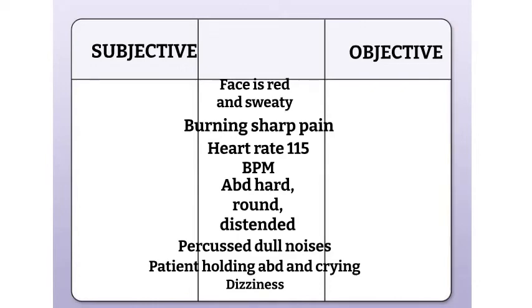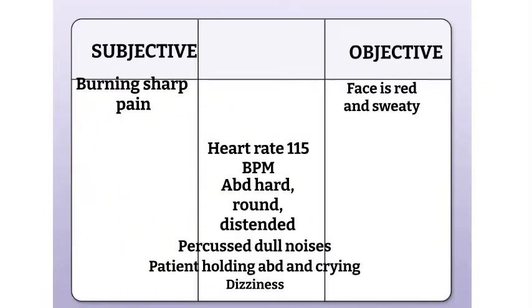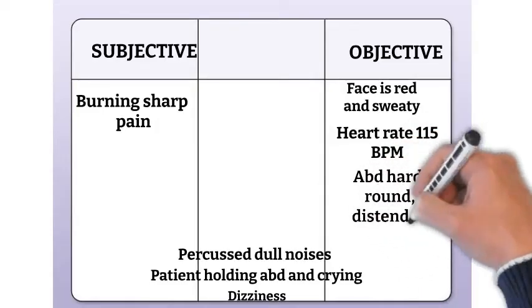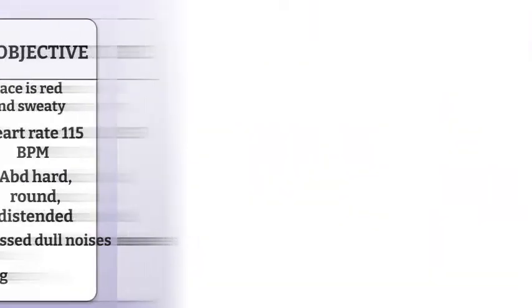The first piece of information is that the patient's face is red and sweaty — we can see this, therefore it's objective. Next, we have burning, sharp pain. We wouldn't know about this unless the patient told us, therefore that goes under subjective. The patient's heart rate is 115 beats per minute — this is measurable, we can't dispute it, therefore it's objective. Next, we have an abdomen that is hard, round, distended, and there are dull noises to percussion. We have to use our senses to determine these things — we can see that the abdomen is round and distended, we can feel that it's hard, we can hear the dull noises to percussion. Therefore, this is objective.